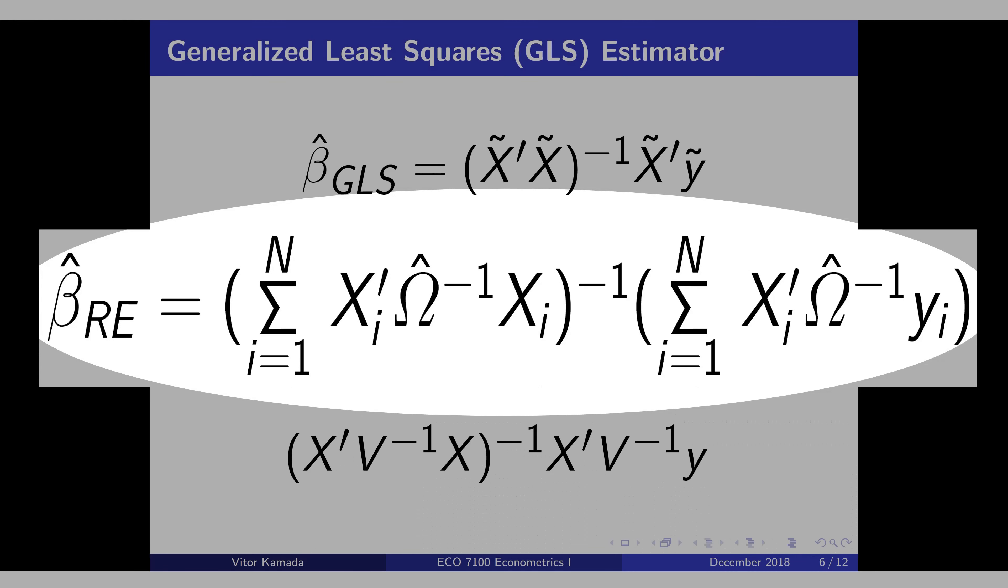Now, let's see the formula for random effect estimator. Rather than use V, I use omega here, and see the omega here as well. That means random effect is a data transformation like GLS.